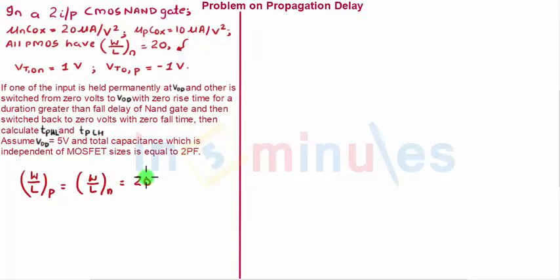Now you might get intimidated by what is written next, but if you pay attention it's a googly type of question—it's a very straightforward question. Just understand what it is trying to tell you. Let's see: if one of the inputs is held permanently at VDD.